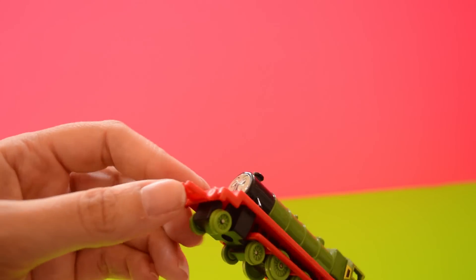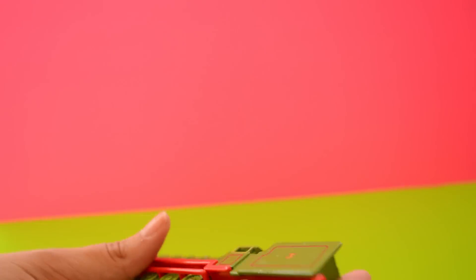So there's James, and finally, not Percy, it's the other green guy, Henry. Come on down. You don't have magnets right there.